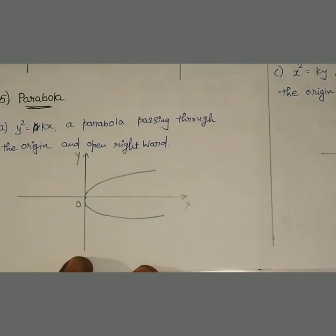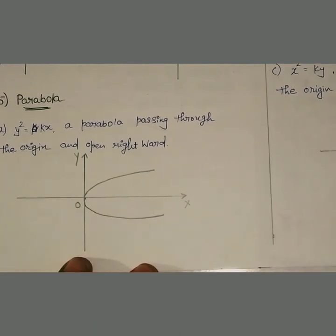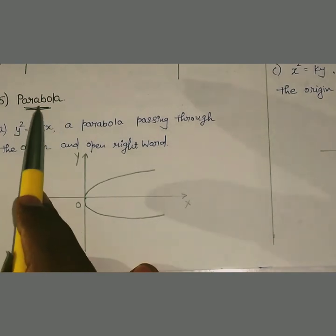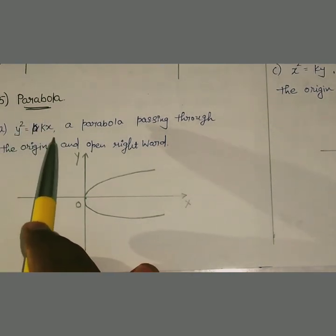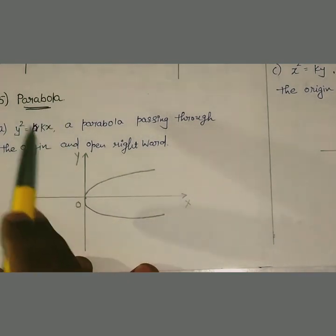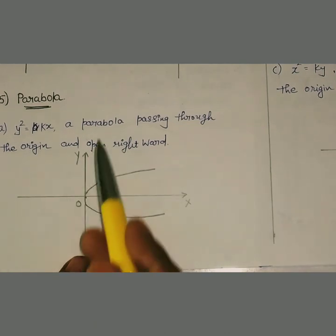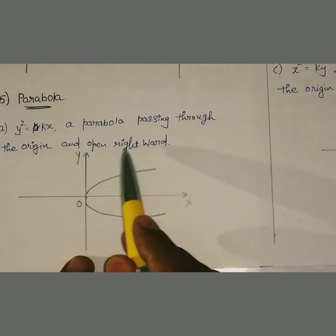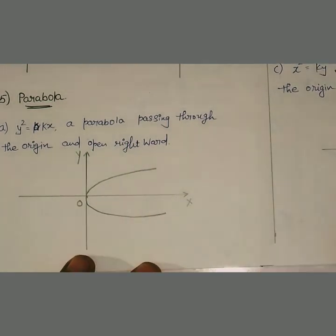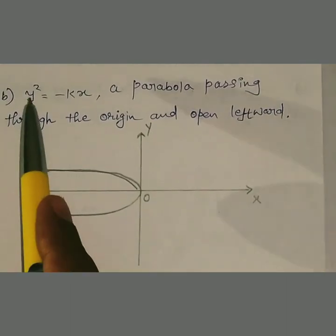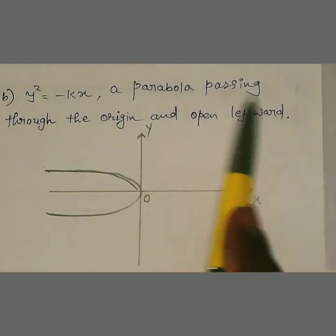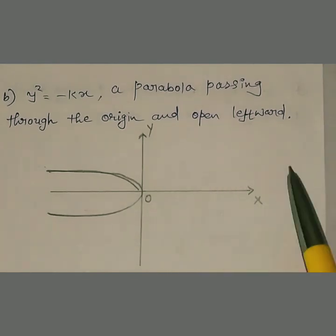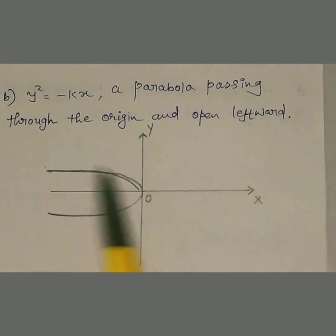Fifth graph: the parabolic graph। इसका equation है y² = kx (या 4ax)। Maths वाले students को यह chapter से ज़्यादा अच्छे से पता होगा। Biology students — सिर्फ याद रखो: y² = kx वाला graph parabola passing through the origin and open right। Case (b): y² = −kx — parabola passing through the origin and open left, यानि negative x-axis पर।